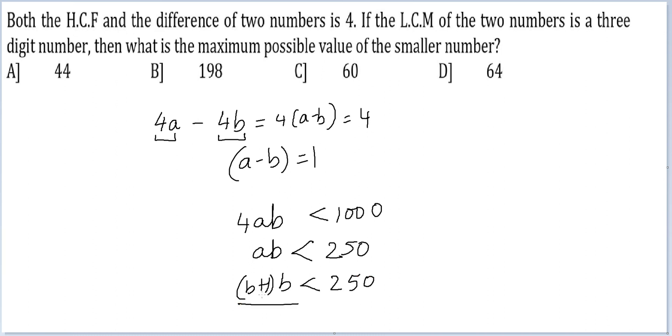Now you simply have to identify for which number that number into the next number is less than 250. B squared plus B. So if you see, I can see the number has to be 15 here. 15 into 16 gives me 240.